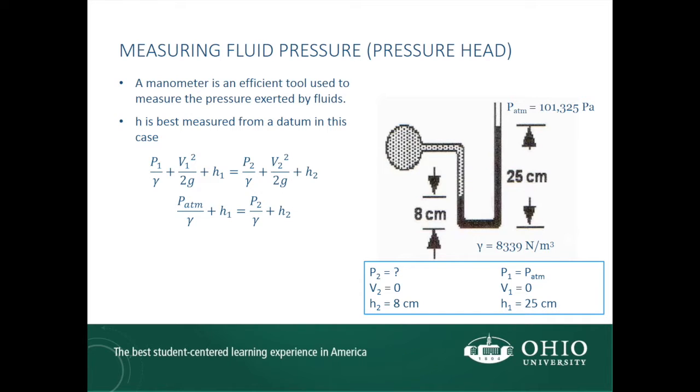The velocity head terms go away since velocity is zero, leaving us with p atmosphere over gamma plus h1 equals p2 over gamma plus h2. We can rearrange this equation to solve for p2, and then substitute our known values to do the final calculation. We find that the pressure at point 2 is 102,743 Pa, or 103 kPa.